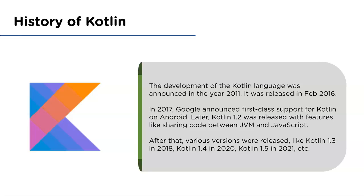The developers at JetBrains were fed up with repetitive code and wanted a better language, but most of their code was already written in Java. Switching to another language would create a bigger headache, so the team decided to create a language compatible with Java with all the features they wanted — and that's how Kotlin was created. In 2017, Google announced first-class support for Kotlin on Android. Later, Kotlin 1.2 was released with sharing code between JVM and JavaScript, followed by Kotlin 1.3 in 2018, Kotlin 1.4 in 2020, and Kotlin 1.5 in 2021.